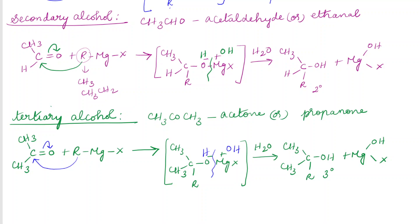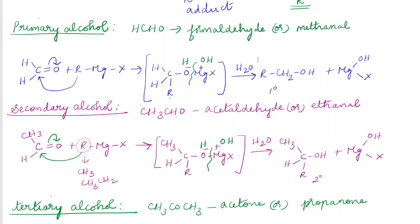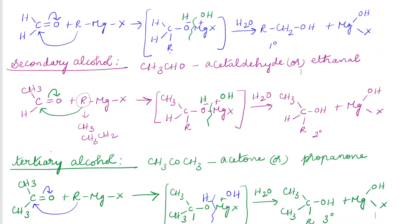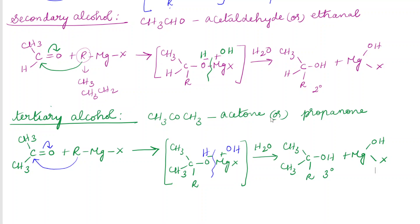Likewise, we can prepare primary, secondary, and tertiary alcohols by using Grignard reagents. The reaction should be followed by hydrolysis. Direct reaction between a carbonyl compound and a Grignard reagent results in the formation of an adduct, which on further hydrolysis leads to the corresponding alcohol. If we take formaldehyde, the product is a primary alcohol. If we take acetaldehyde or ethanal, it is a secondary alcohol. If we take acetone or propanone, it is going to be a tertiary alcohol.